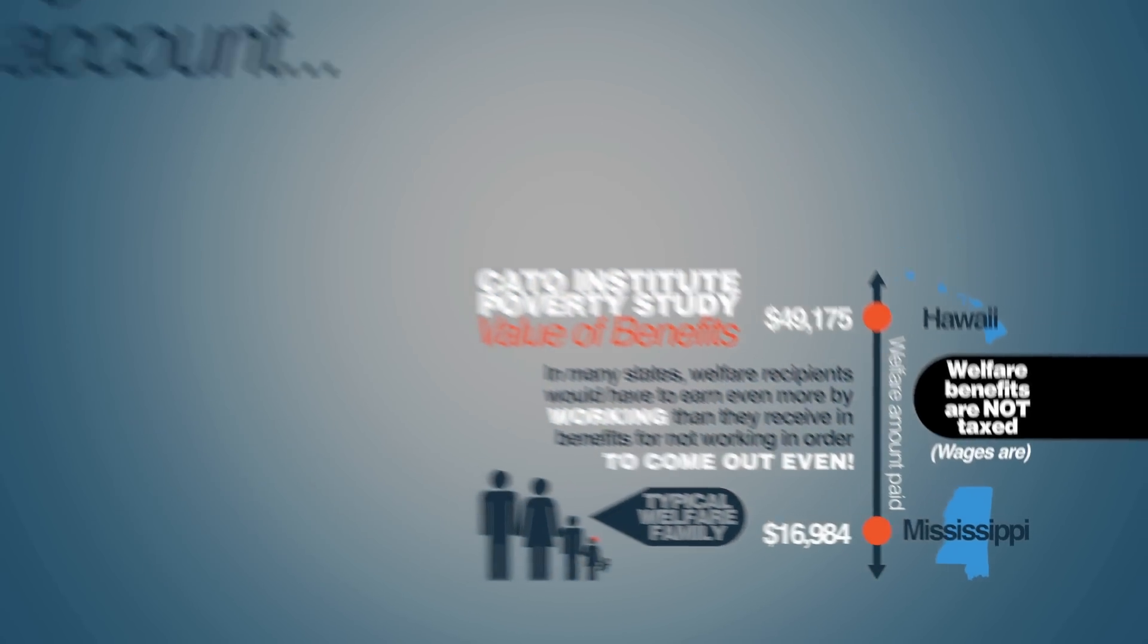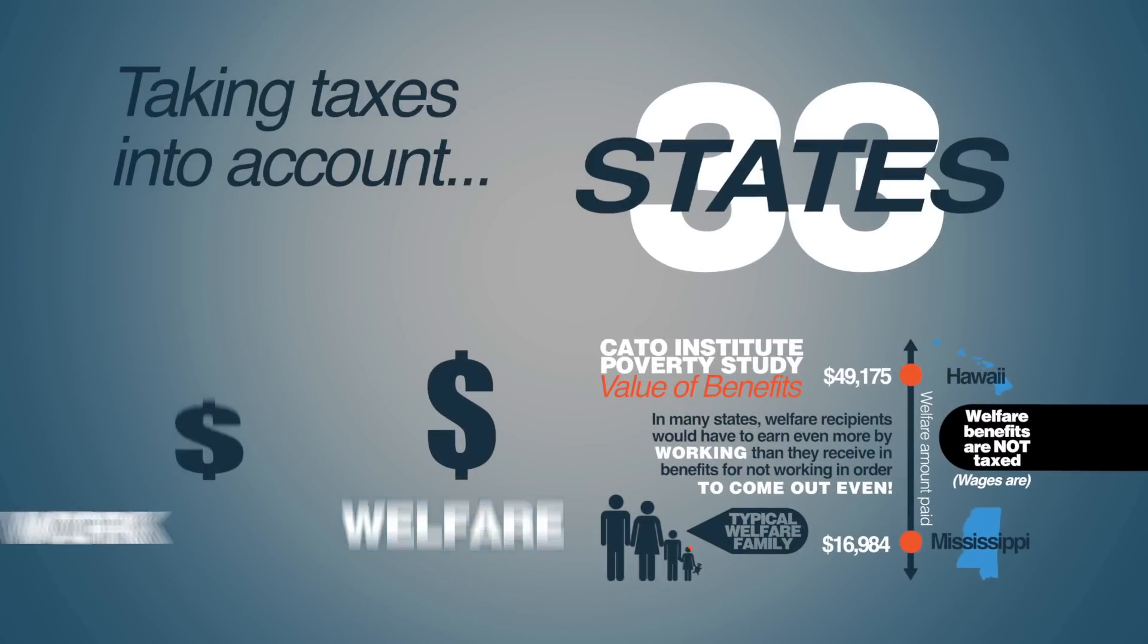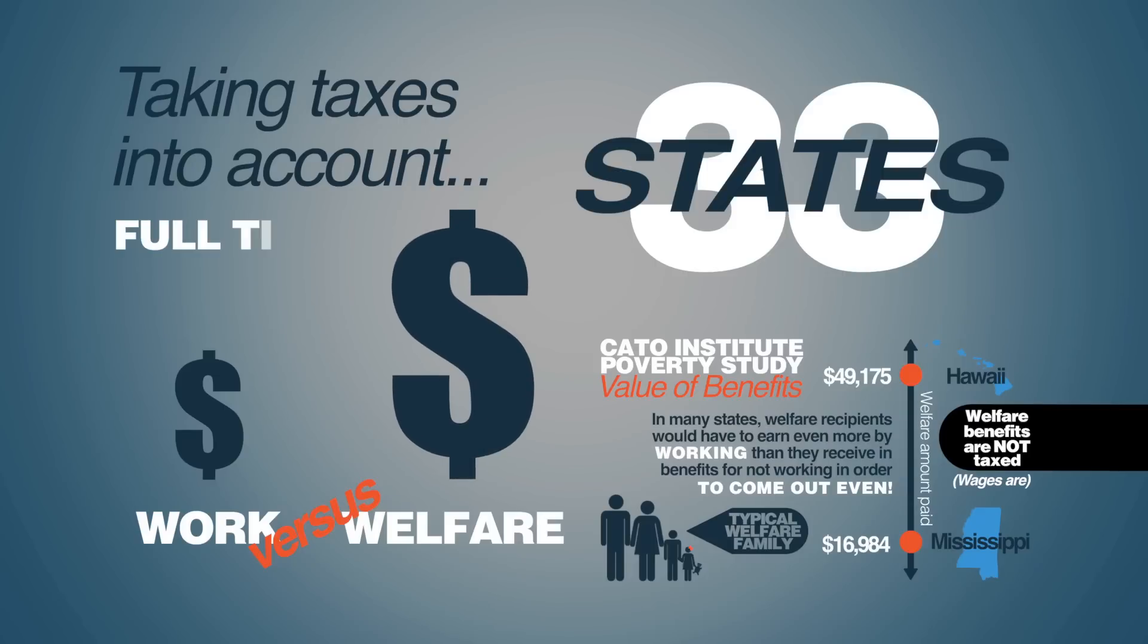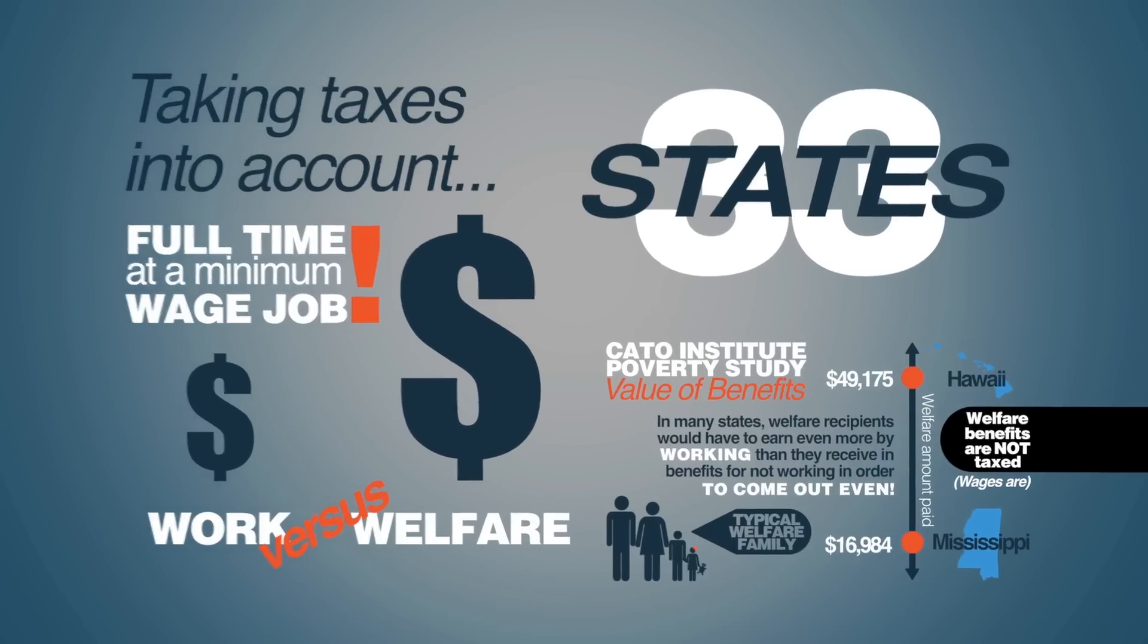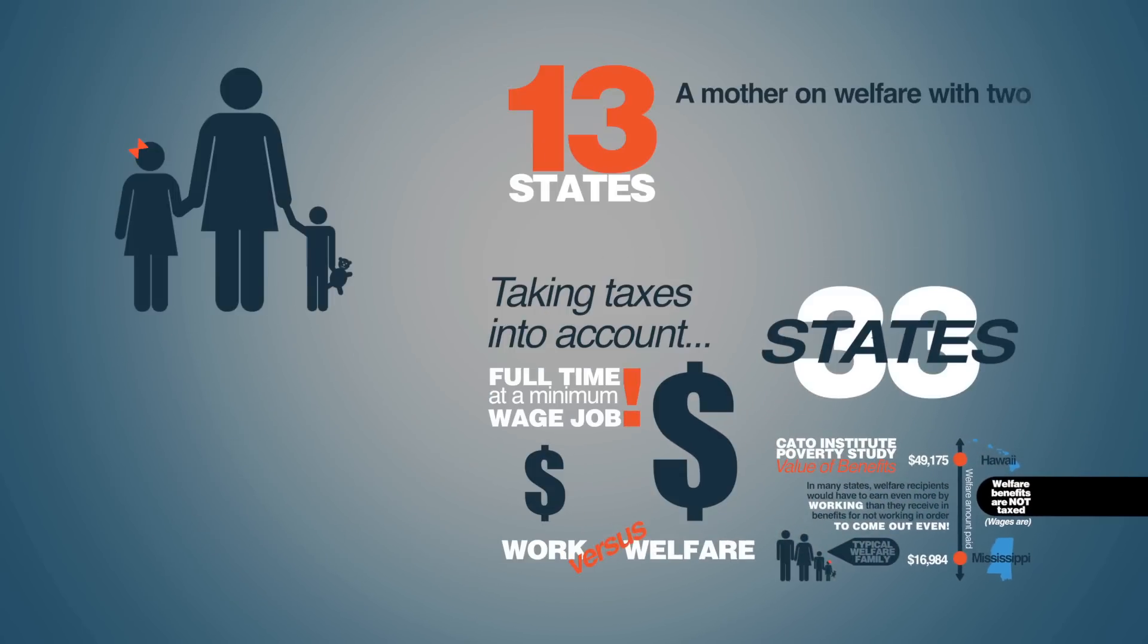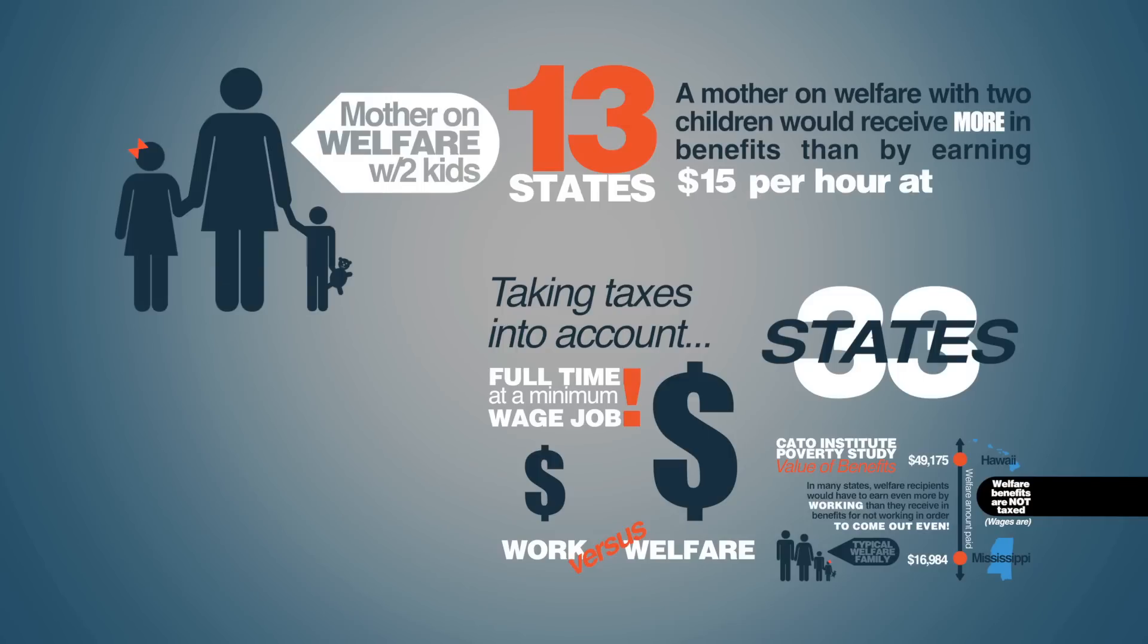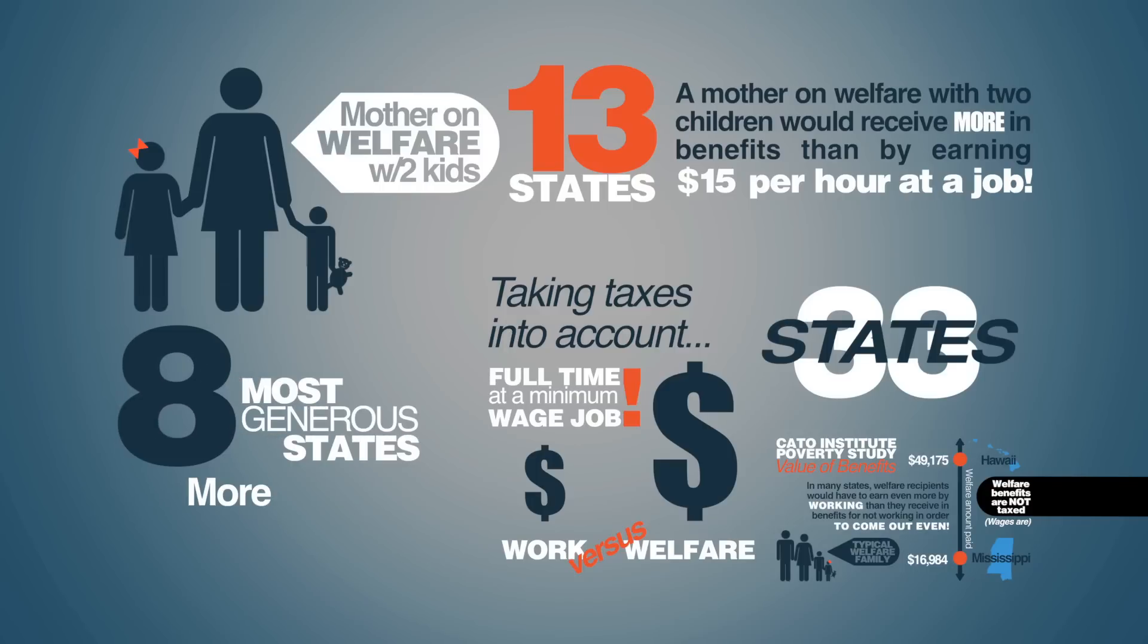In fact, taking taxes into account, in 33 states, a welfare recipient would receive more income through benefits than a worker could from working full-time at a minimum wage job. In 13 states, a mother on welfare with two children would receive more in benefits than by earning $15 per hour at a job. And in the eight most generous states, she could get more in benefits than by working at a $25 per hour job. And that's without having to get to a place of business at a specific time, having to work eight hours, or deal with a boss and fellow employees.